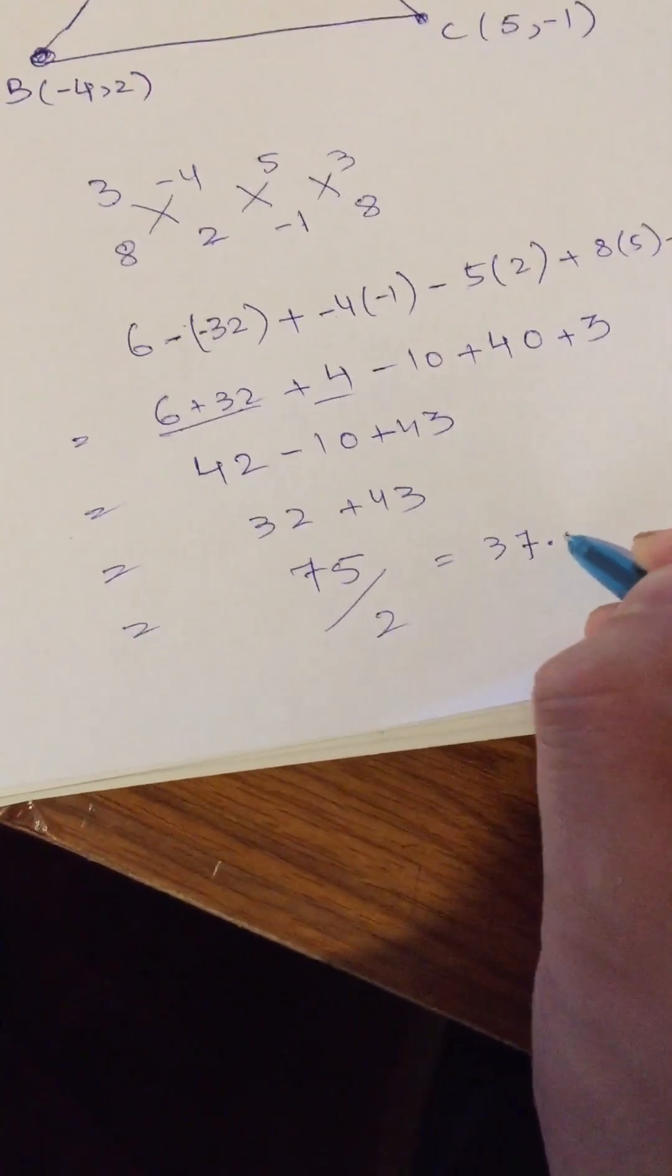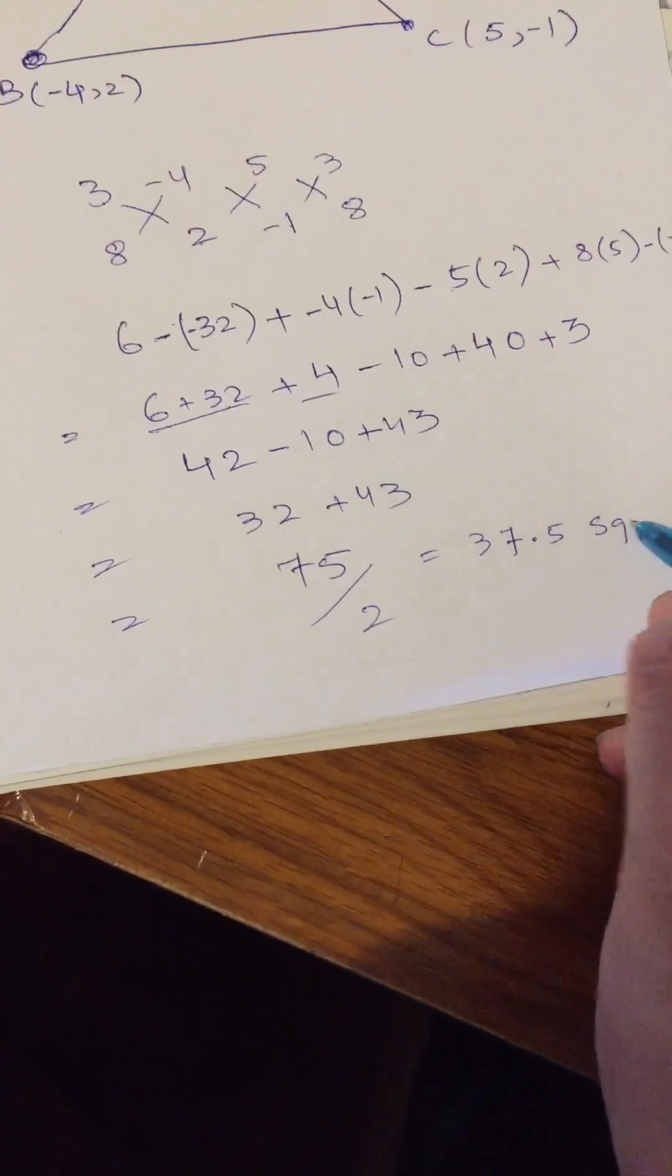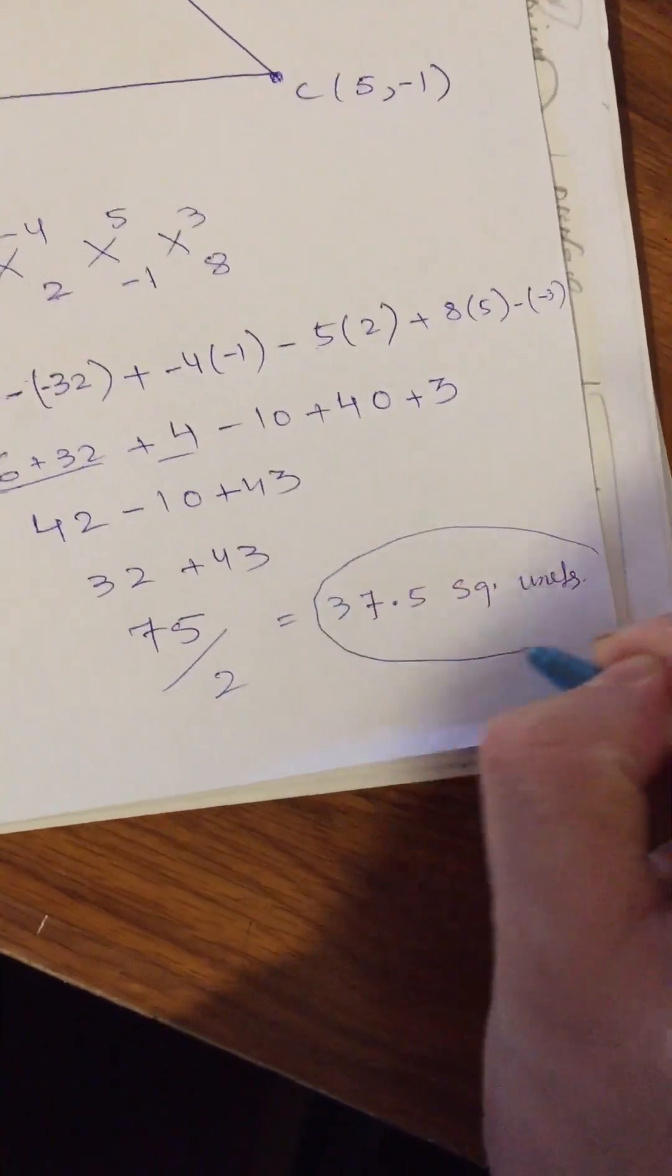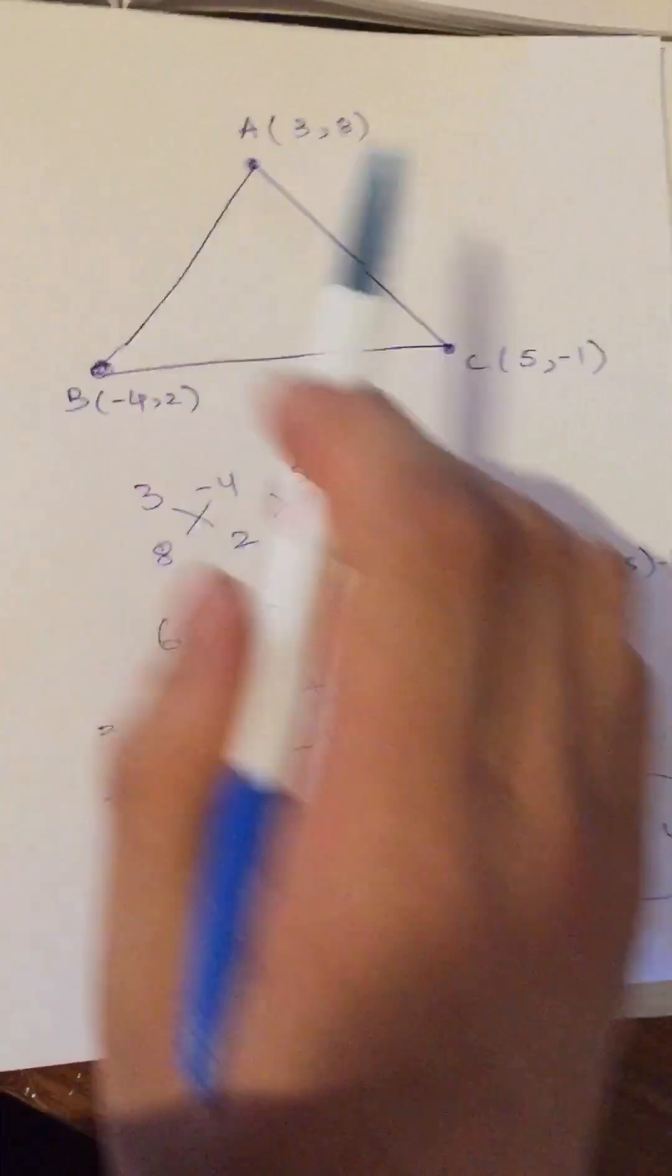Now what you have to do in the last step is to divide by 2, that is equal to 37.5 square units. This is the area of your triangle with vertices given.